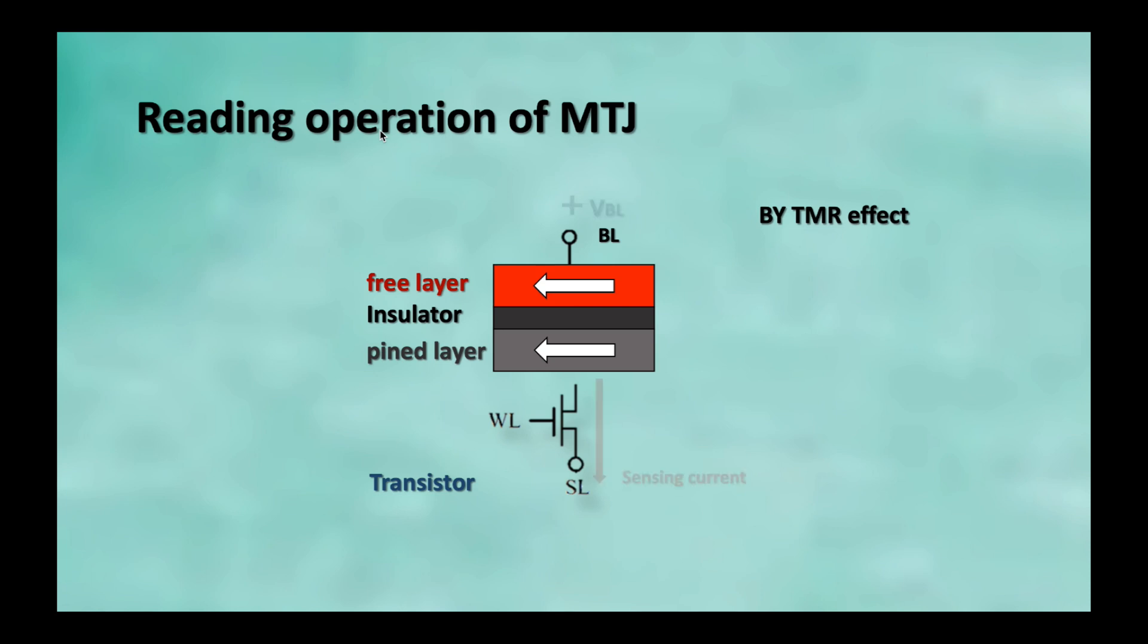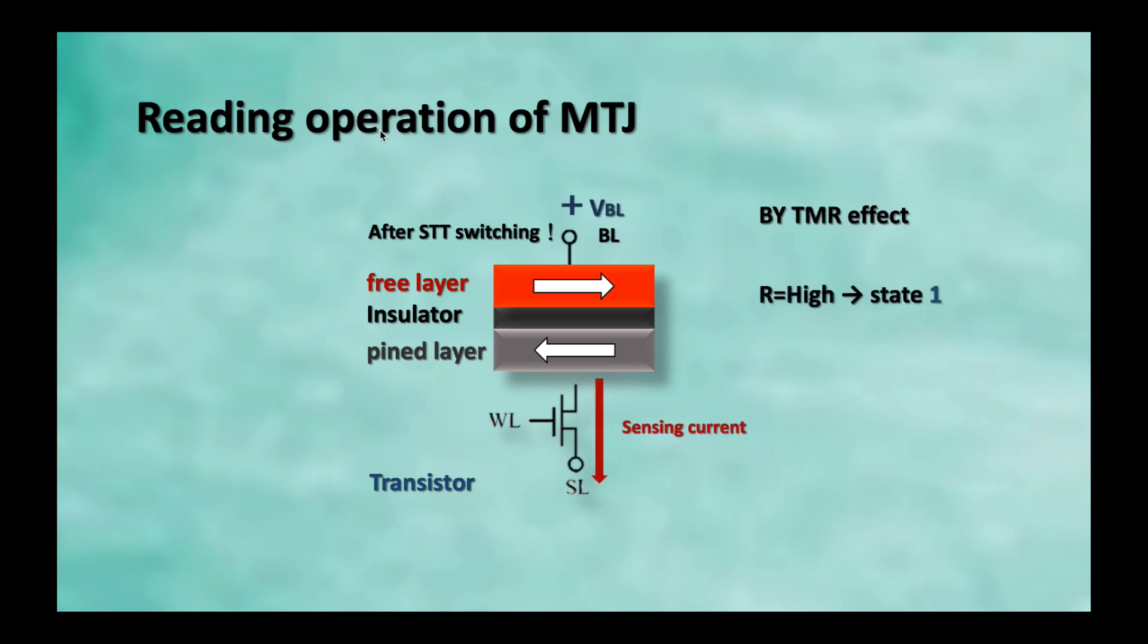Let's come back to STT-MTJ cell. The magnetic properties of two ferromagnetic layers are different. The direction of magnetic moment of the top layer can be easily changed by spin torque transfer. We call it free layer. However, the bottom one cannot. We call it pinned layer. By such a design, we can create two different states, anti-parallel state and parallel state. The next question is, how can we recognize these two different states by electrical means? The answer is, we drive a sensing current and take advantage of TMR effects.